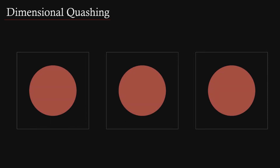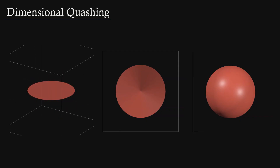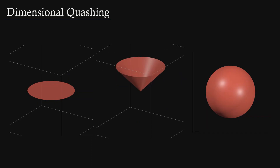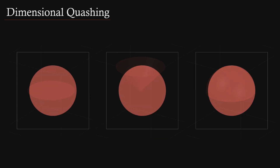The problem continues when we move up a dimension. Without the lighting effects giving us clues, all three of these shapes will look like disks, but only the one on the left is actually a disk and therefore two-dimensional. The other two shapes are a cone and a hemisphere and are therefore three-dimensional. They only appear as a disk because we're looking straight down on them and our axis of observation is perfectly aligned with the z-axis, therefore reducing our view down one dimension.